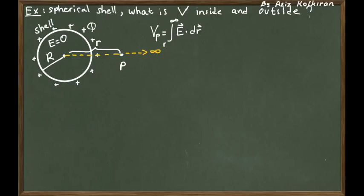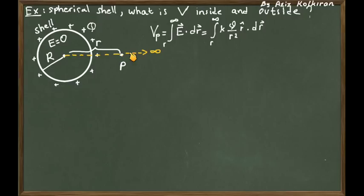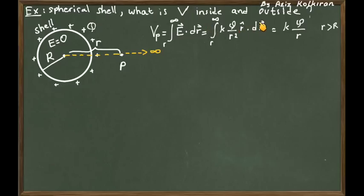We know that the electric field created outside of a shell is just the electric field of a point charge Q. We put this expression for the electric field dot product with dr, and take this line integral over a straight line starting from point P going to infinity passing through the center of the sphere. KQ are constants and can be taken outside the integral. We have dr over r squared inside the integral, and the integral of 1 over r squared is just minus 1 over r, evaluated at infinity and r, which gives 1 over r.